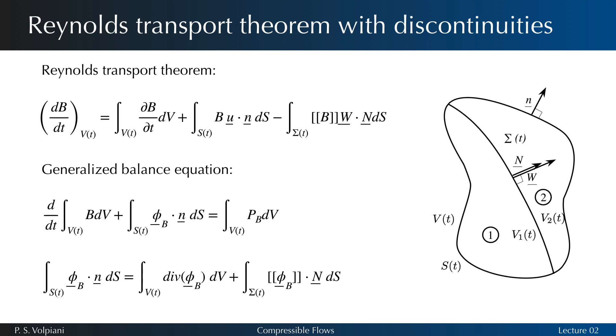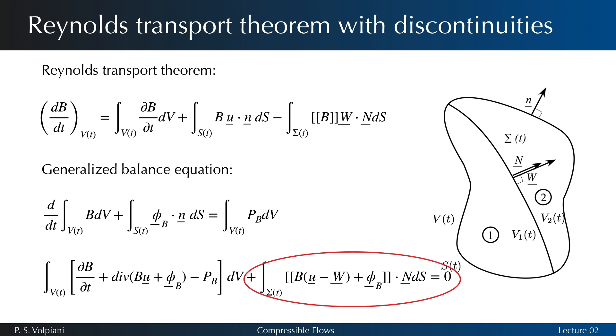Let's now generalize the balance equation, where phi b is the diffusion flux of b across the surface and pb is a production term. If phi b is piecewise continuously differentiable over v except in sigma, then we have the following expression. And the final balance equation reads like this. We see that the balance equations are the same as the ones previously derived. The solely difference is now that the jump condition sigma must be satisfied.